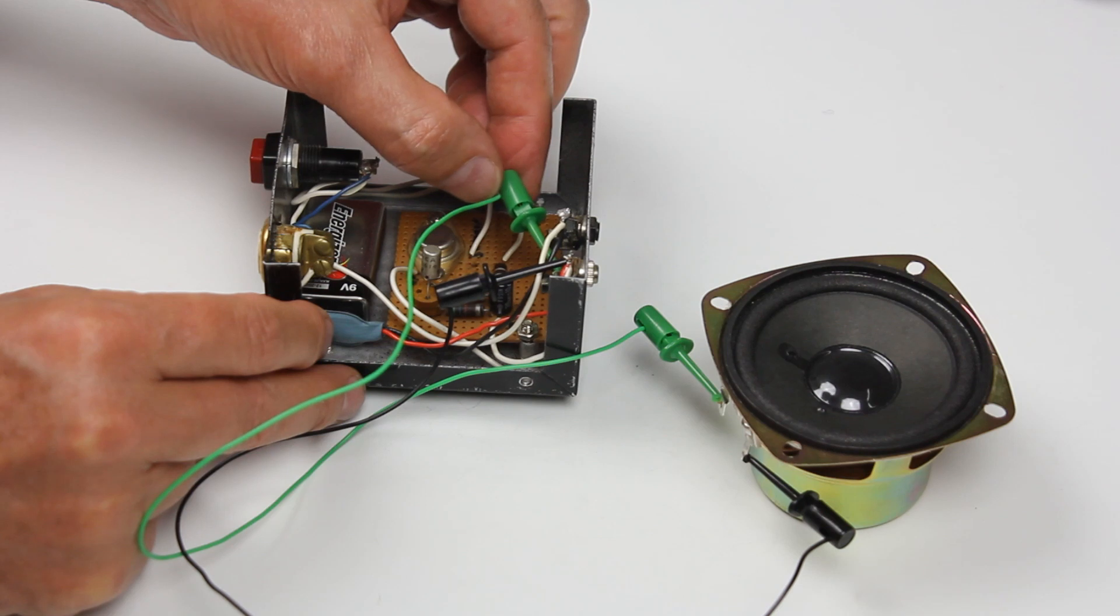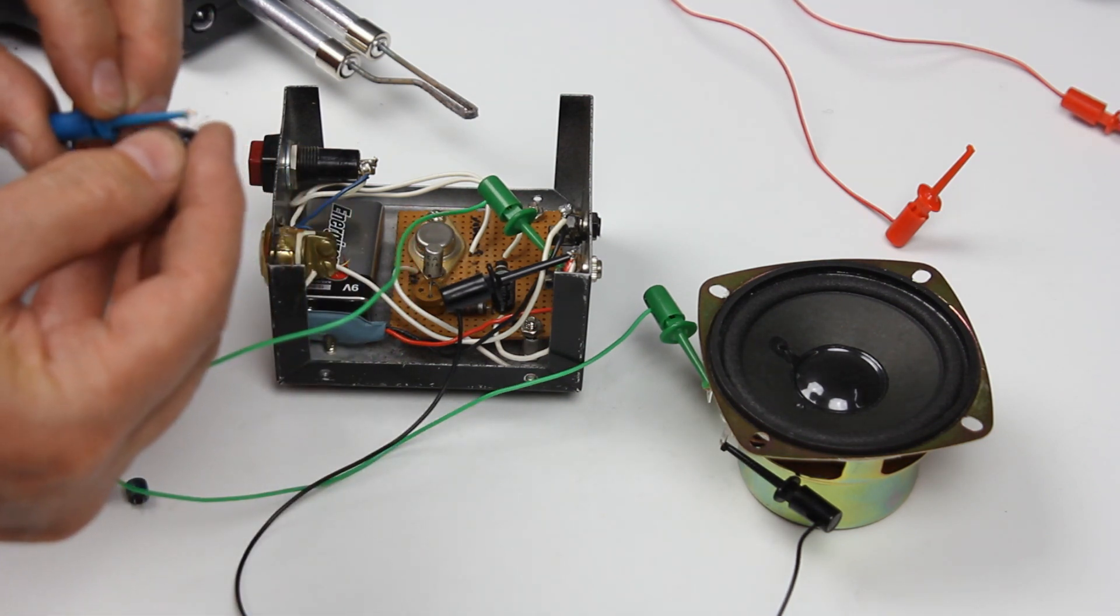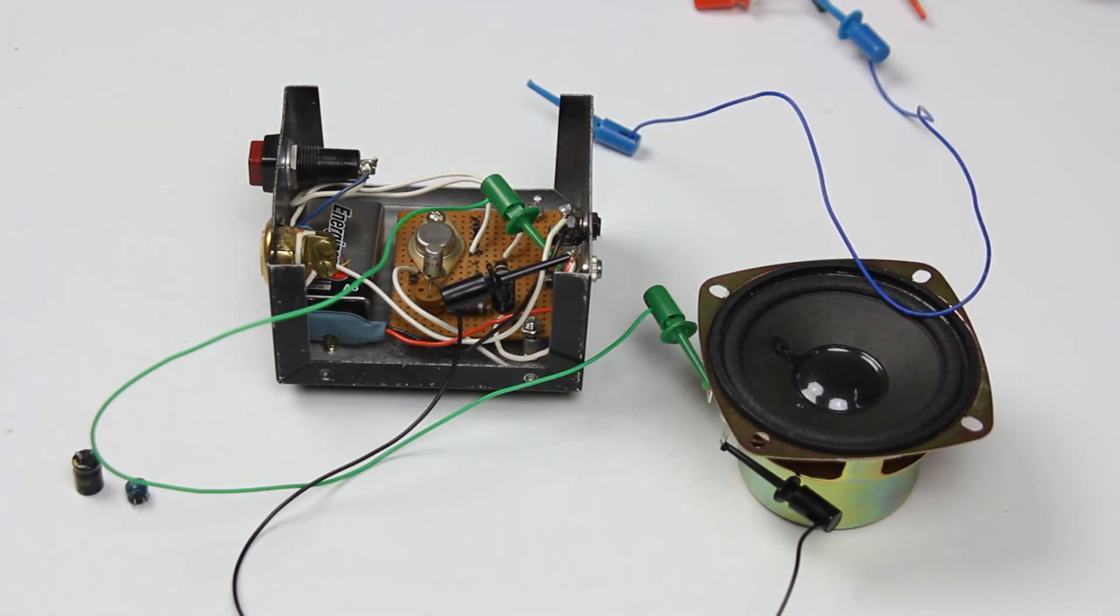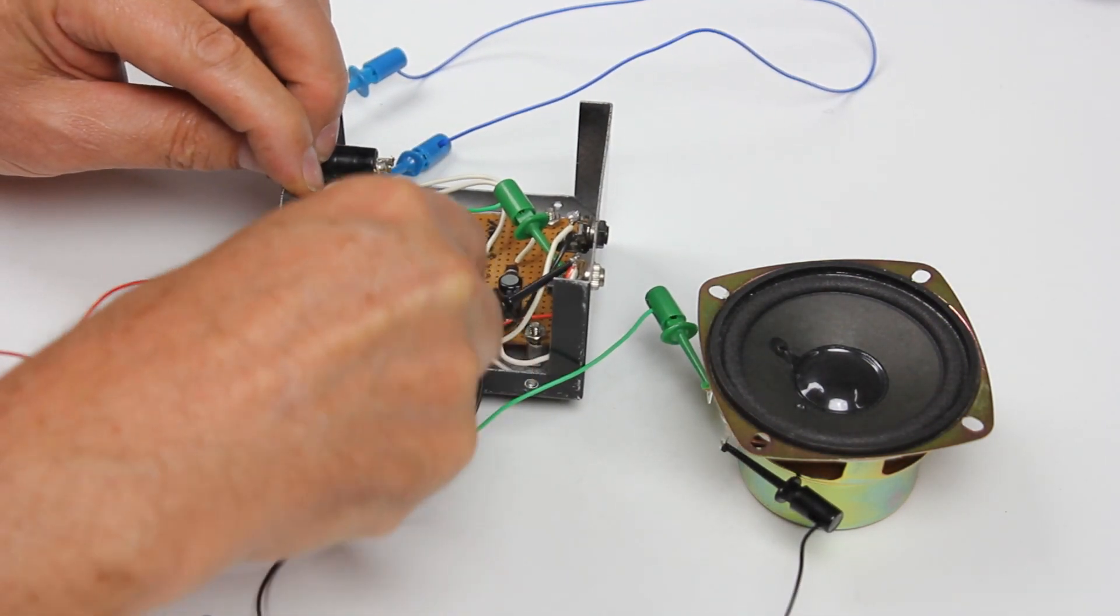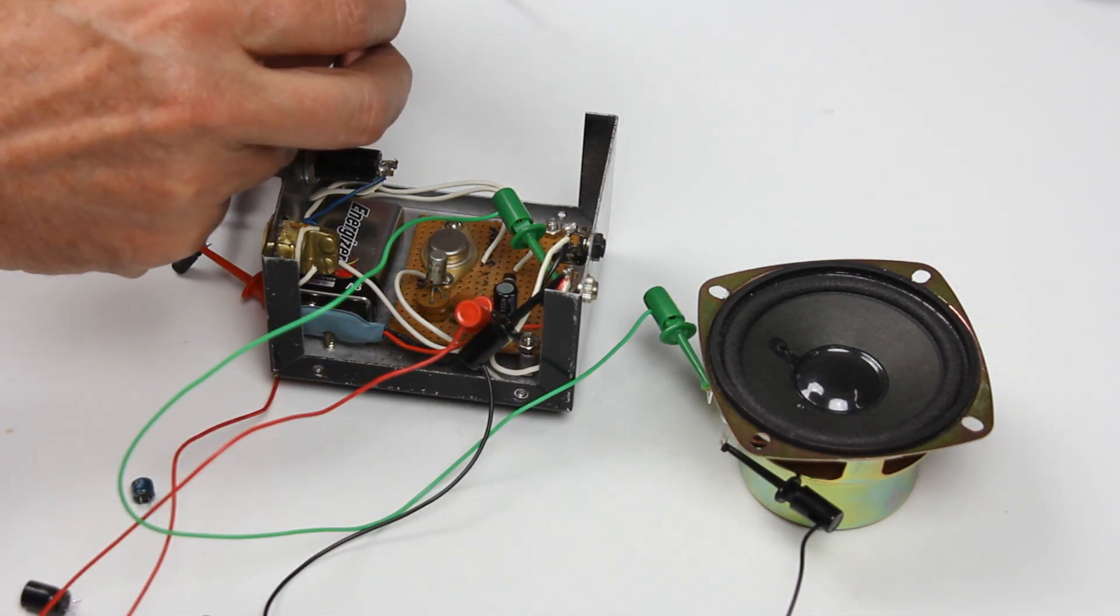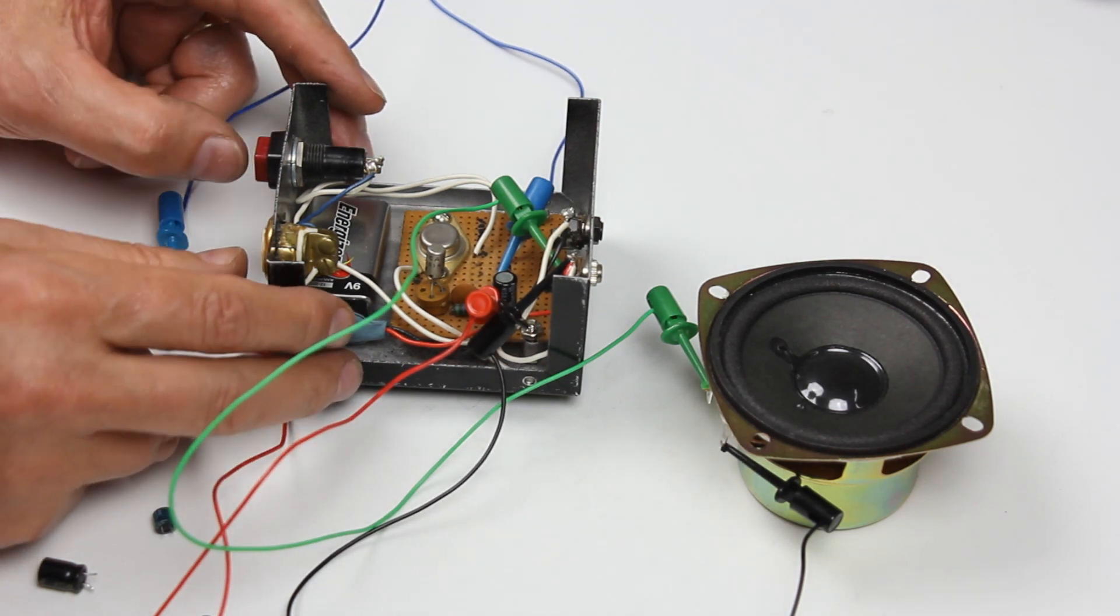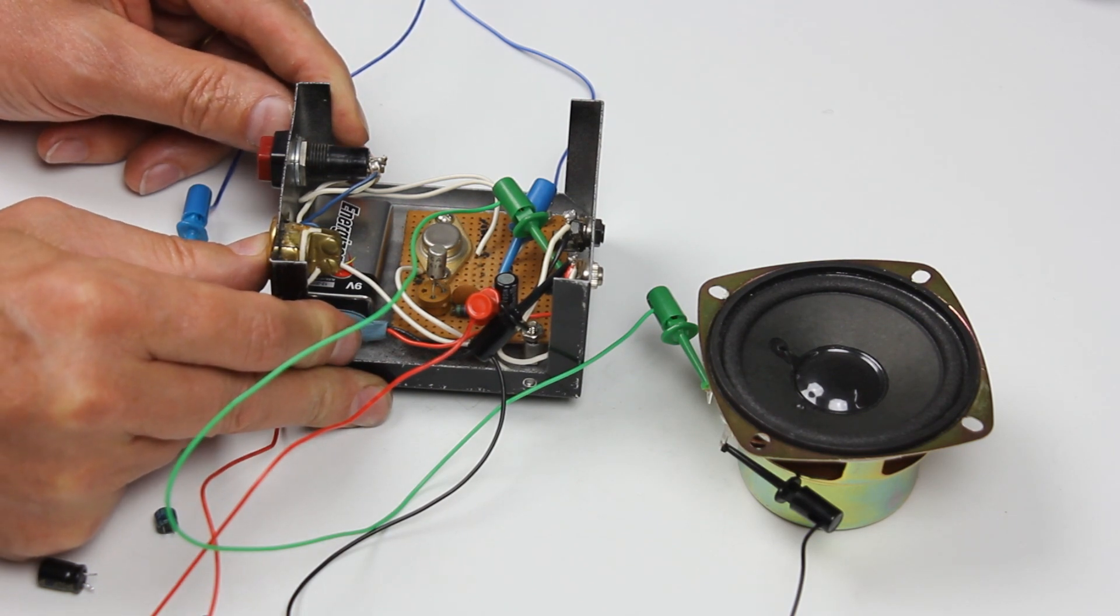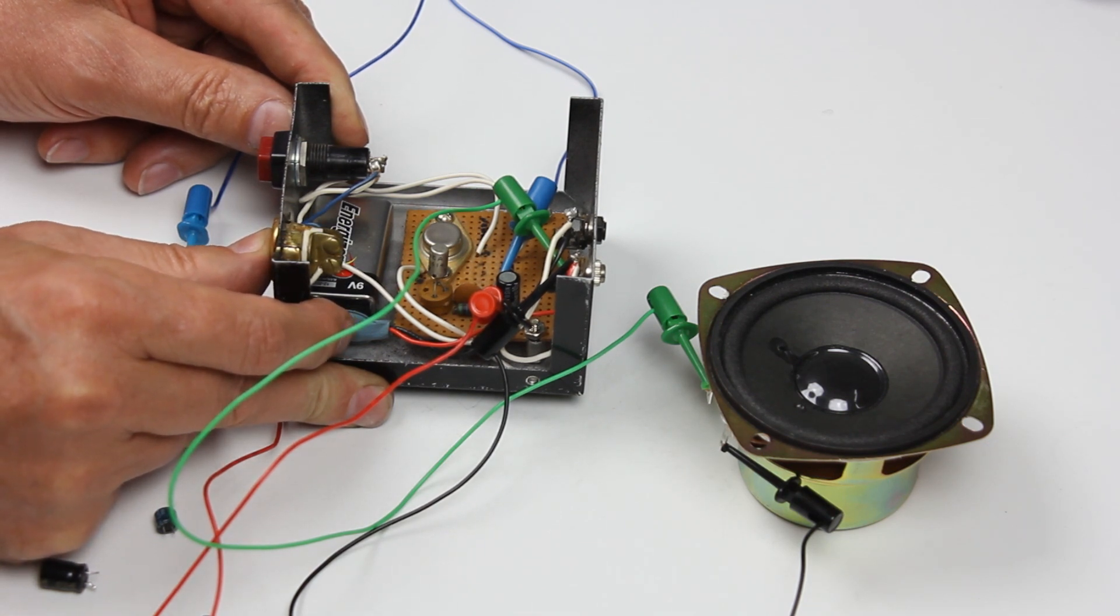I bet this electrolytic capacitor is partially dried up. It couldn't be open or the tone would be constant. It couldn't be a dead short, the circuit wouldn't oscillate at all. I should be able to see if I'm right by putting another electrolytic capacitor in parallel with this one. That's much better, much closer to what I remember.